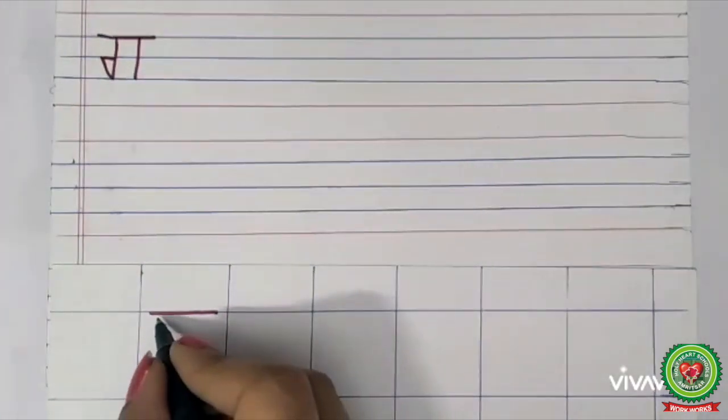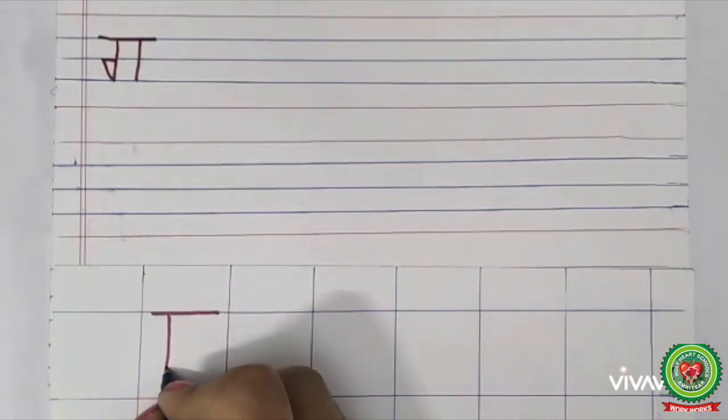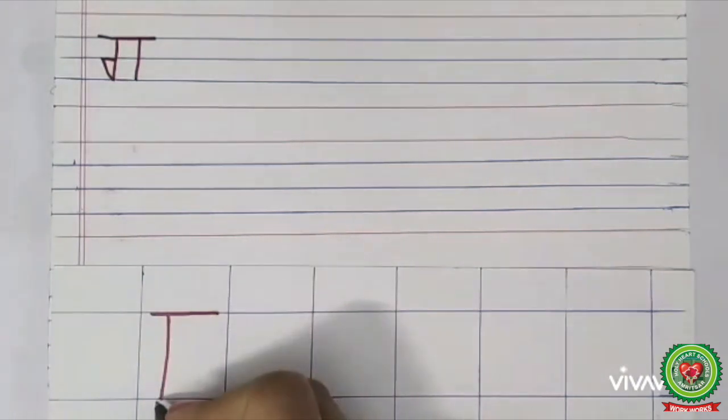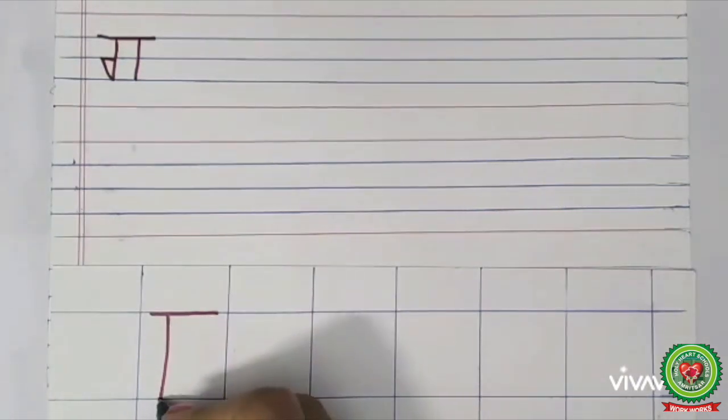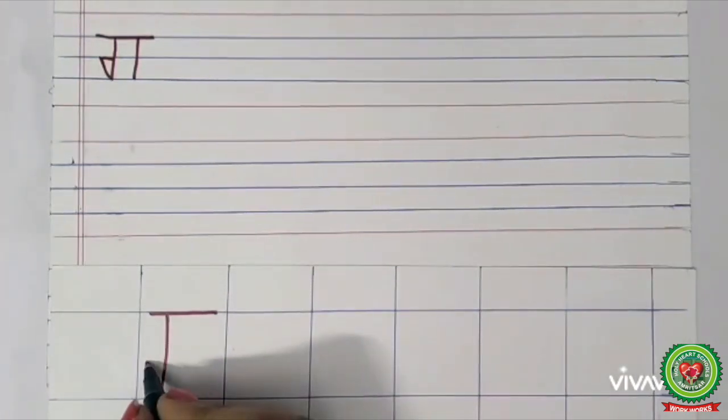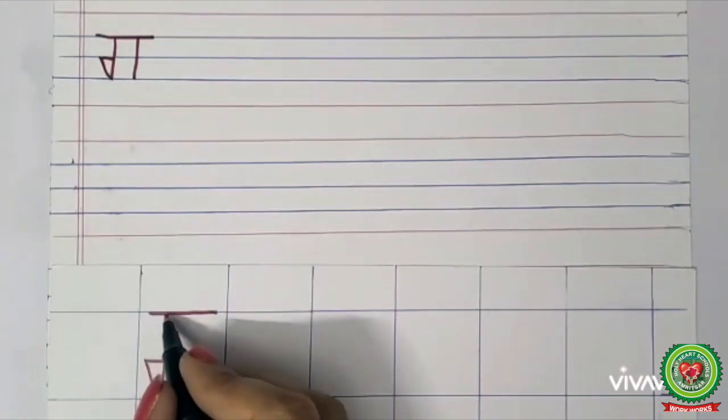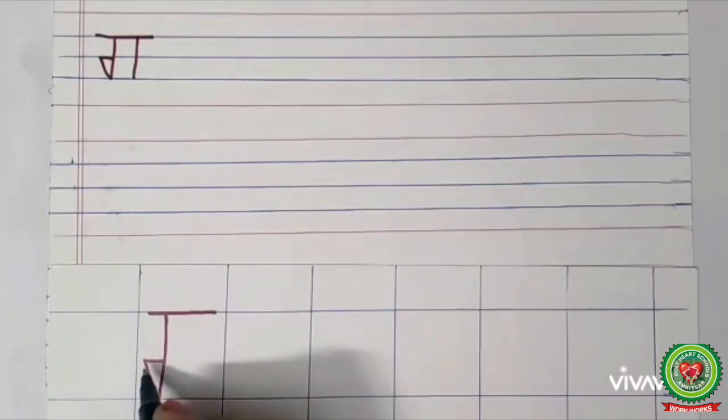Then after leaving some gap, we have to draw a standing line, then a slanting line in an upward direction. Then from there we have to draw again a sleeping line. This line is big but we have to draw a small sleeping line like this.